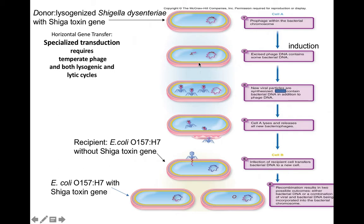This phage-shiga toxin gene combination is the template during synthesis. So all the phage DNA made during the synthesis phase will be a combination of phage and the shiga toxin gene from the donor. Here we have assembly — all the phage carry the recombinant phage-shiga toxin gene. Here they are being released via lysis of the Shigella dysenteriae. Now our recombinant phage attaches to a neighboring E. coli O157H7, injects it with that combination of phage-shiga toxin gene, and the phage DNA carried the shiga toxin gene into the E. coli chromosome. The E. coli was lysogenized, and right next to the prophage, it now carries the shiga toxin gene. So now we have a shiga toxin-producing E. coli.